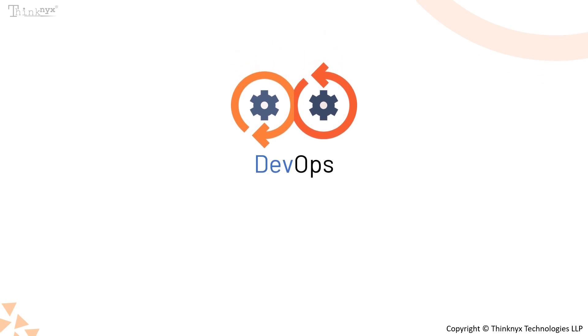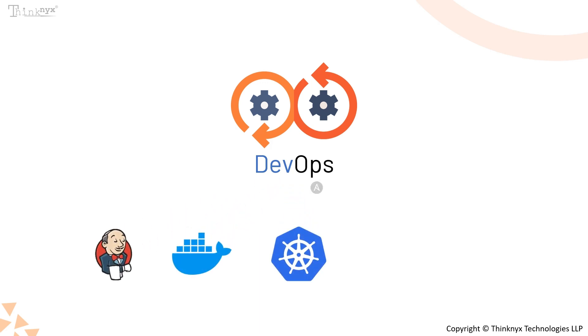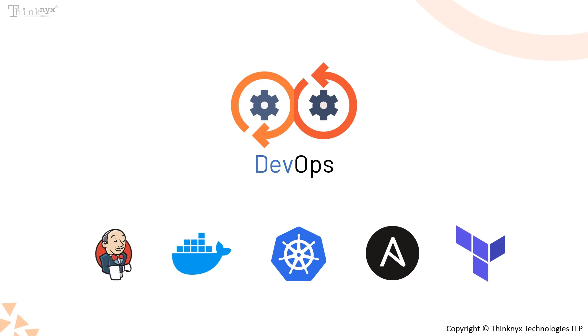DevOps teams often leverage tools like Jenkins, Docker, Kubernetes, Ansible, and Terraform, among others, to implement these practices effectively.